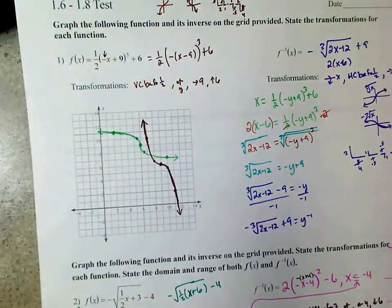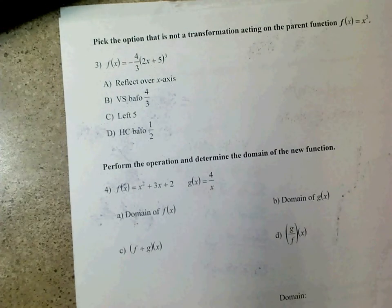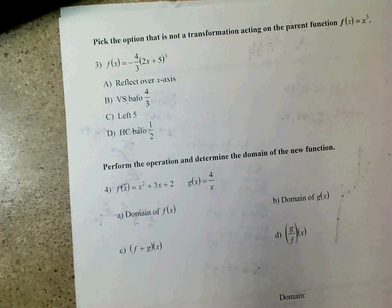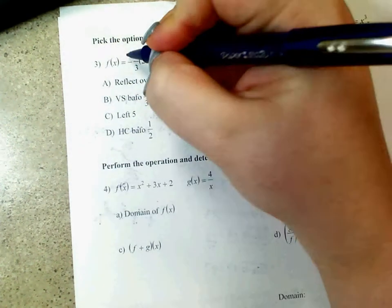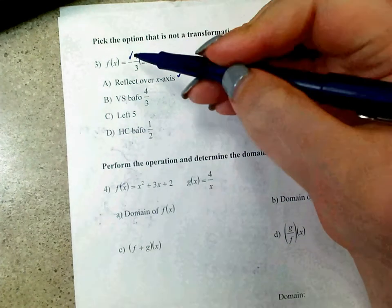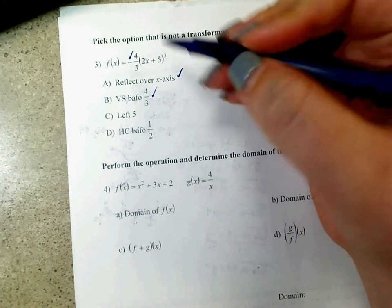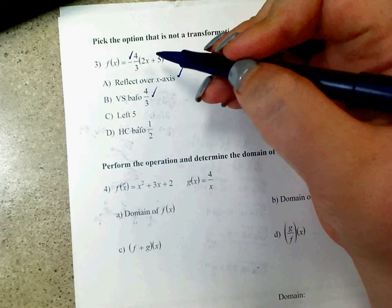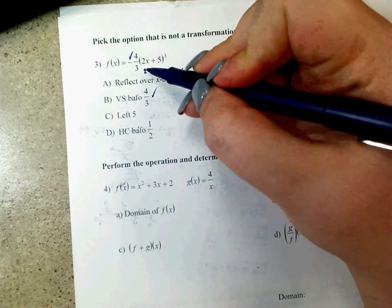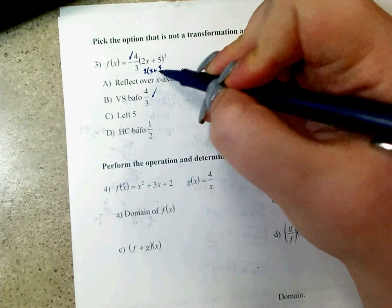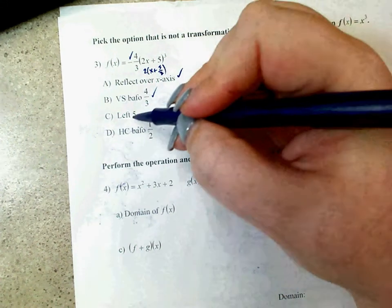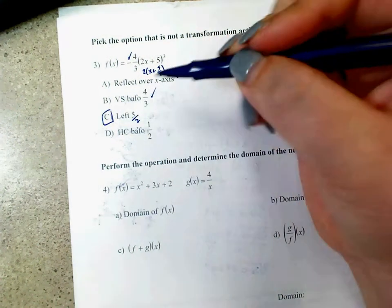Number 3: pick the option that is NOT a transformation acting on the parent function x cubed. Reflecting over the x-axis — that's the negative, true. Vertical stretch by a factor of 4 thirds — that's what that is, good. Left 5 — that's a definite no. This is 2 times (x plus 5 halves), which actually means going left 5 halves. So C is the answer, because a 2 on the interior is a horizontal compression by a factor of one half.